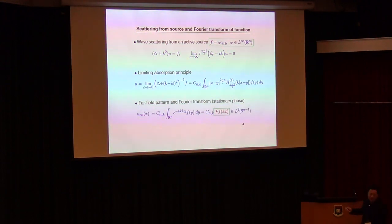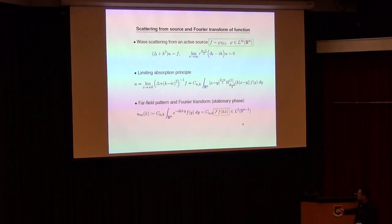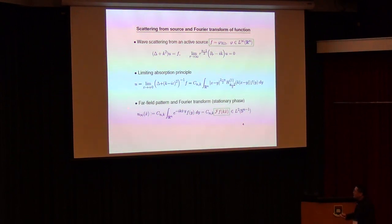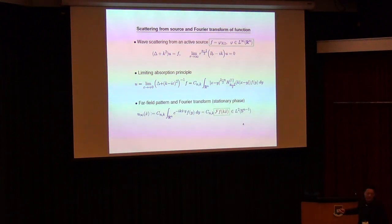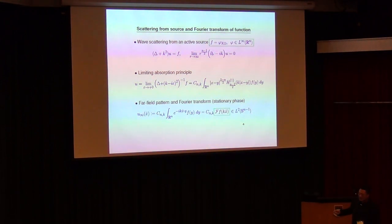This is a very simple partial differential equation — you can solve it explicitly using the limiting absorption principle and the inverse Fourier transform. You get this solution described by an integral equation, where this term is the fundamental solution of the partial differential operator. Importantly, you get the so-called far-field pattern using a simple mathematical technique called stationary phase — you take the leading order term. This far-field pattern is defined on the unit sphere and encodes all the scattering information of the source.